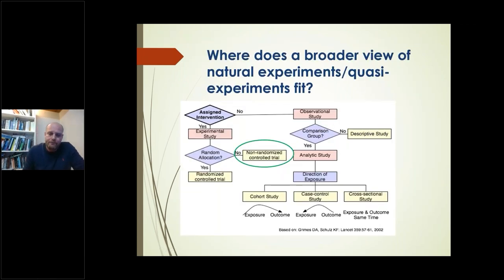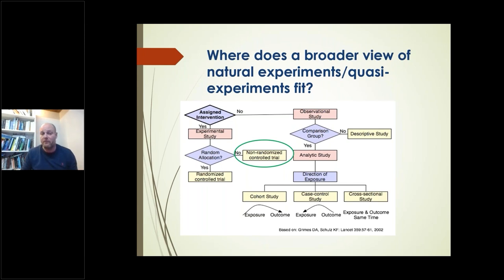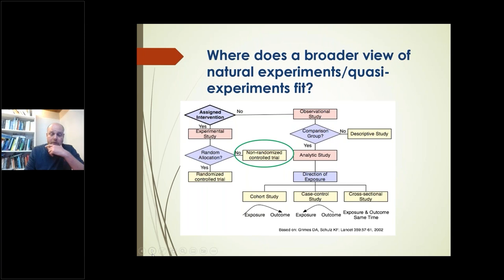Looking at a standard overview of observational study designs, the randomized control trial on the left is the gold standard. Then you have observational studies: descriptive studies, cohort studies, case-control, and cross-sectional studies. The natural experiment evaluation — quasi-randomized or non-randomized control trial — sits in between, borrowing strengths from both the RCT and observational epidemiology, but also suffering from some limitations of each. It's an intermediate study design not used often enough in environmental studies.